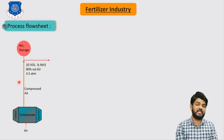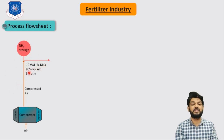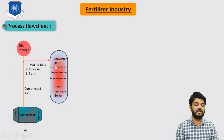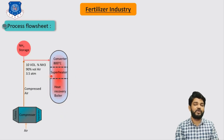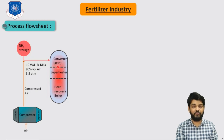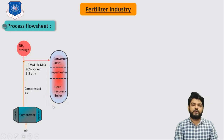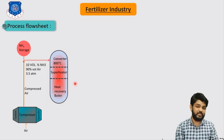Both reactants are sent to a specially designed converter, or reactor. This reactor is specially designed to serve three purposes: at the top section it serves as the converter, in the middle section as the superheater, and in the bottom part as the heat recovery boiler.